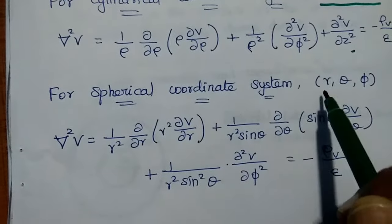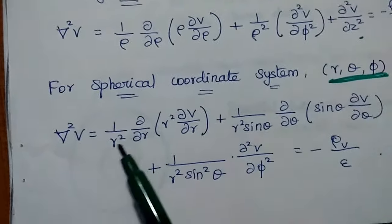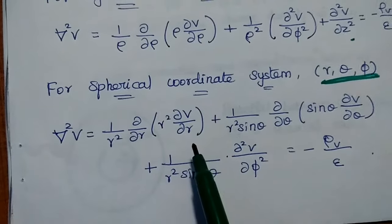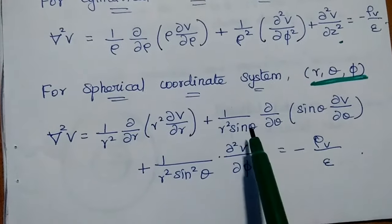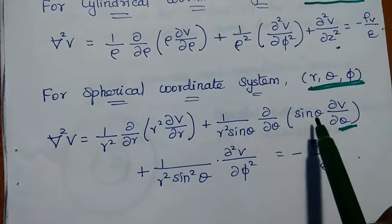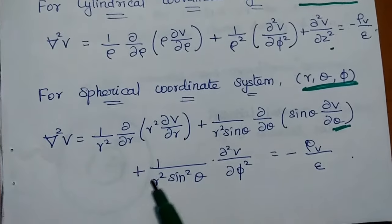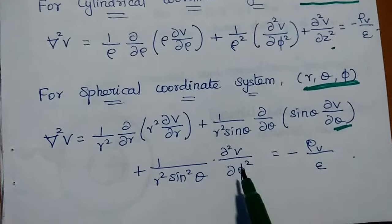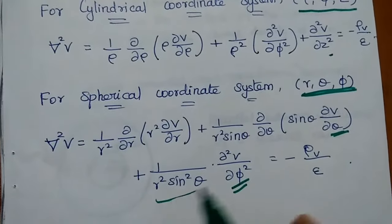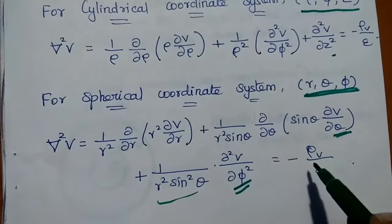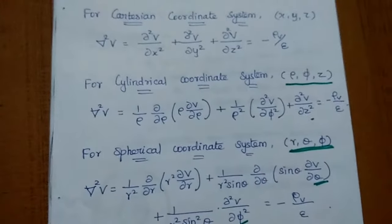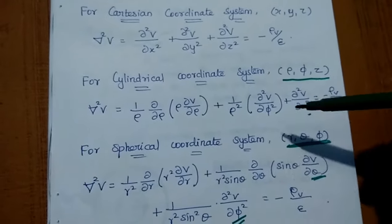For the spherical coordinate system with coordinates R, theta, phi, del squared V equals 1 over R squared times partial by partial r of R squared times partial V by partial r, plus 1 over R squared sin theta times partial by partial theta of sin theta times partial V by partial theta, plus 1 over R squared sin squared theta times partial squared V by partial phi squared, equals minus rho V by epsilon. These three are the different 3D coordinate systems to express the Poisson equation.